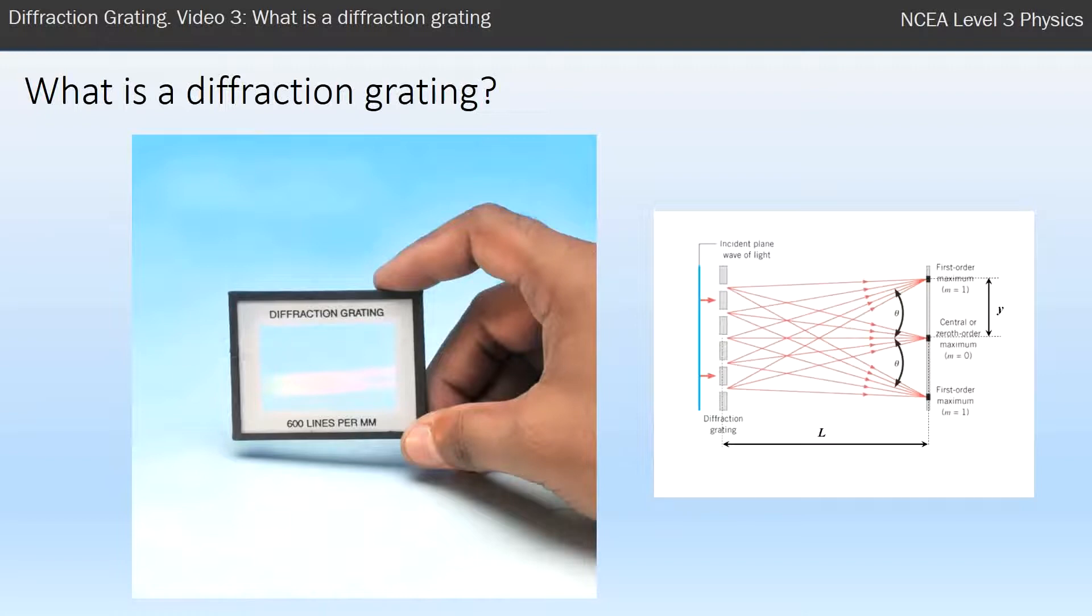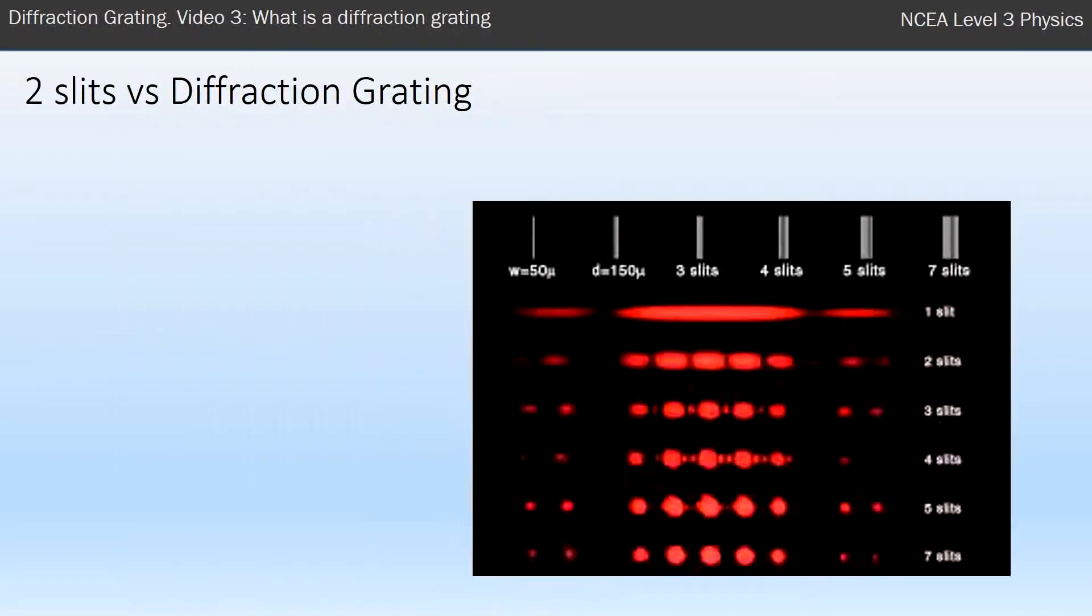And places where it's dark as well. So the difference between the double slit and the diffraction grating is shown in this diagram here.